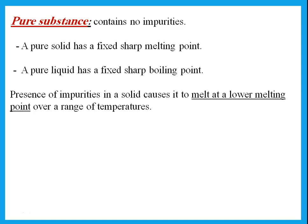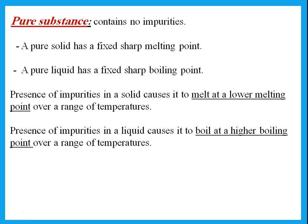For a liquid, presence of impurities causes it to boil at a higher boiling point over a range of temperatures. The boiling point of pure water is 100°C. If you dissolve something in the water and try to boil it, it will boil at something like 100.1, 100.2, 100.3 — only slightly higher, not very much. It is slightly lower for solids and slightly higher for liquids.